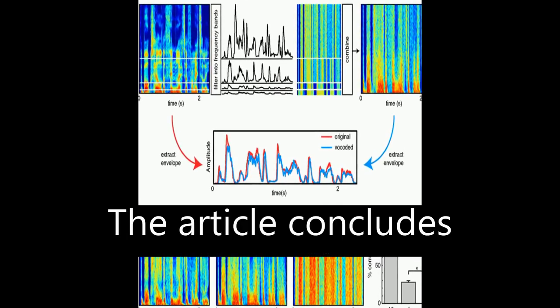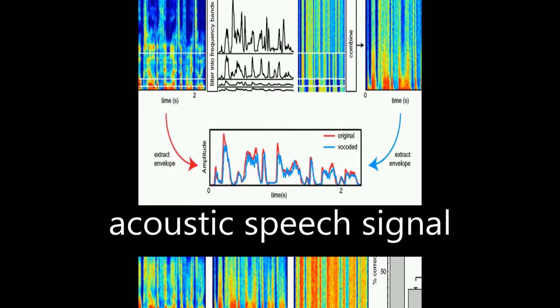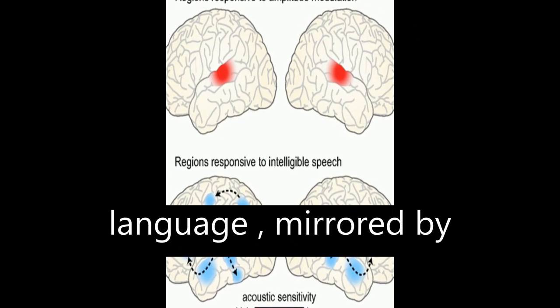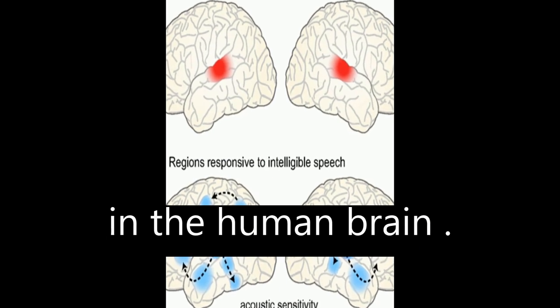The article concludes that low-frequency oscillations in the acoustic speech signal form the foundation of a rhythmic hierarchy supporting spoken language, mirrored by phase-locked oscillations in the human brain.